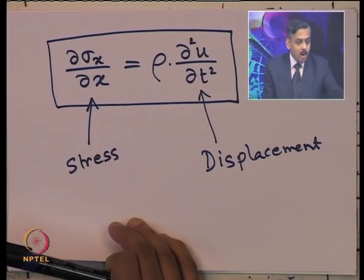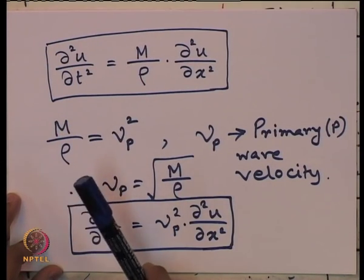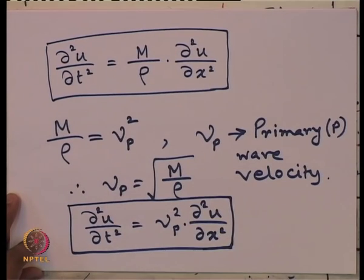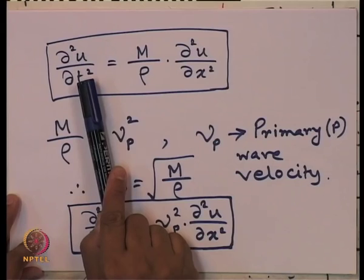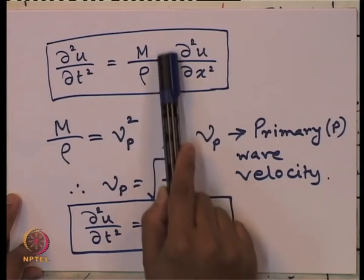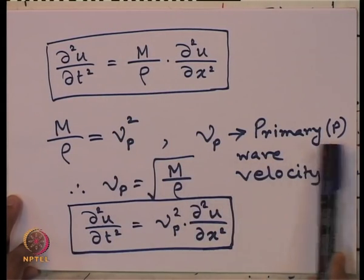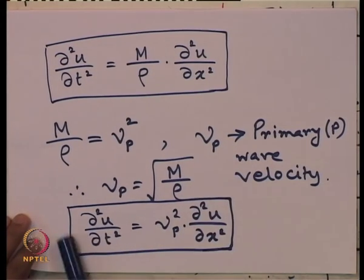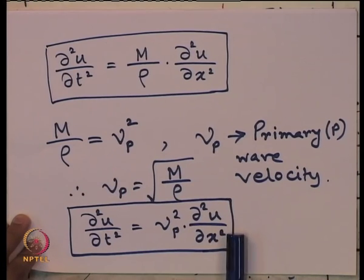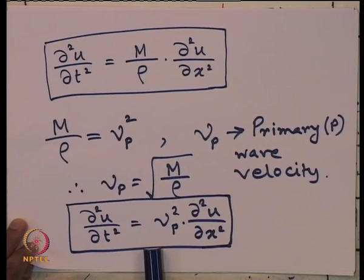After deriving that, for further simplification we used the stress-strain relationship and the strain-displacement relationship, arriving at the expression: the acceleration (second derivative of u with respect to time) is related to the second derivative of displacement with respect to x through the operator M/ρ, which is defined as the square of the primary wave velocity V_p. So the final governing equation for one-dimensional longitudinal wave propagation is: ∂²u/∂t² = V_p² · ∂²u/∂x².